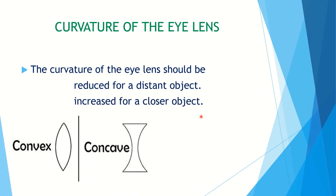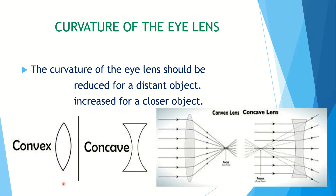You can see in this picture the difference between the structure of the convex and concave lens. The path of light rays passing through the two lenses is shown in the second picture.